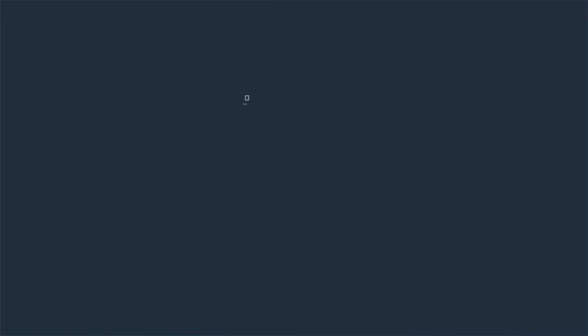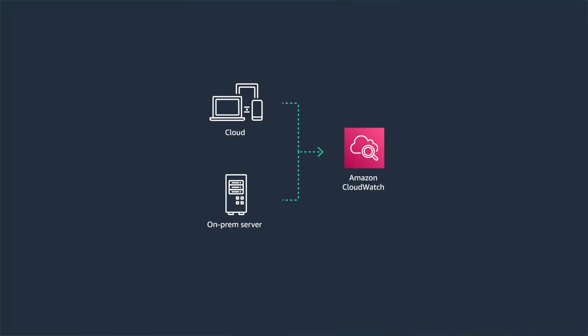Now that you know how to monitor your account activity, how about your cloud resources and applications running on AWS? How do you know the health of your application or the performance of the system? Amazon CloudWatch is a monitoring service for your cloud resources and applications run on AWS. You can use CloudWatch to collect logs and metrics from various AWS services and even on-premises servers to help you better understand the health of your application.